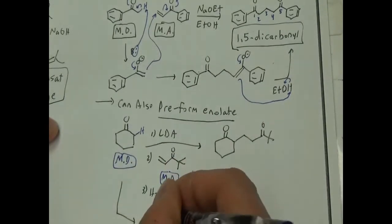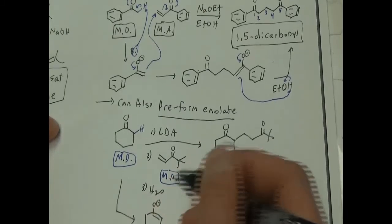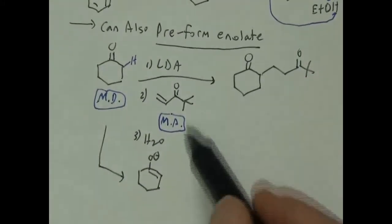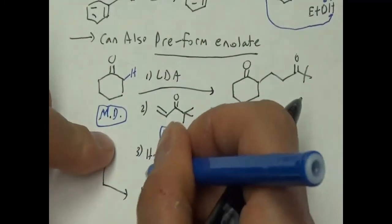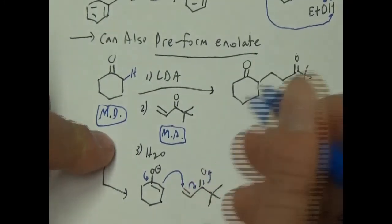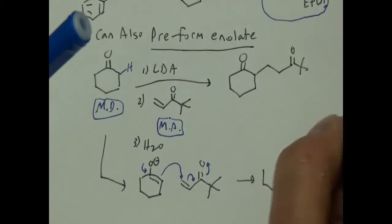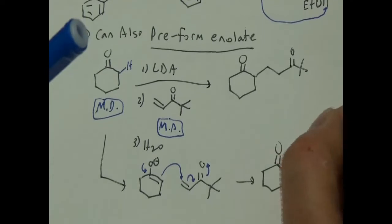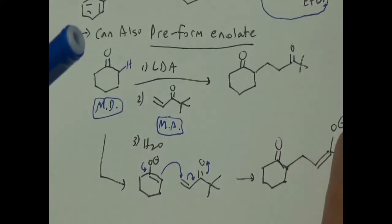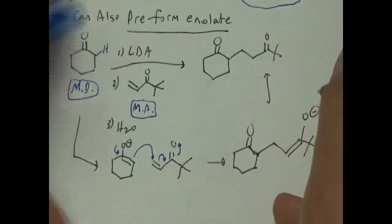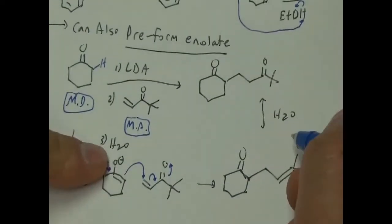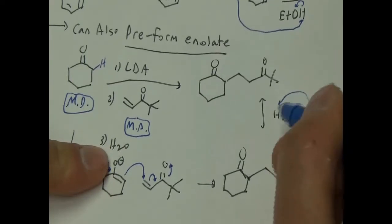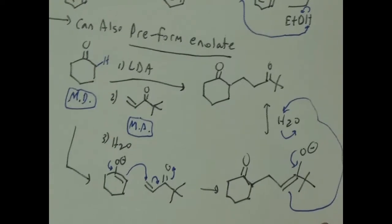The product of a Michael is always a 1,5-dicarbonyl — those two carbons are attached in a 1,5-dicarbonyl manner. The mechanism is exactly the same as above, just using a super strong base. Base takes the proton, we draw the enolate, then we use the Michael acceptor. The O⁻ swings and this goes there. Then we use water: the enolate grabs the proton — O⁻ swings down, double bond attacks, kick off hydroxide, and you get your final product.